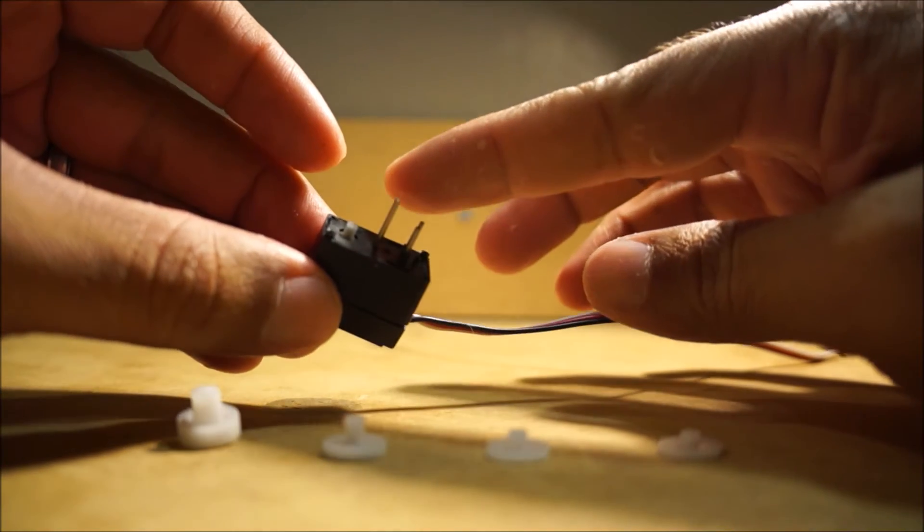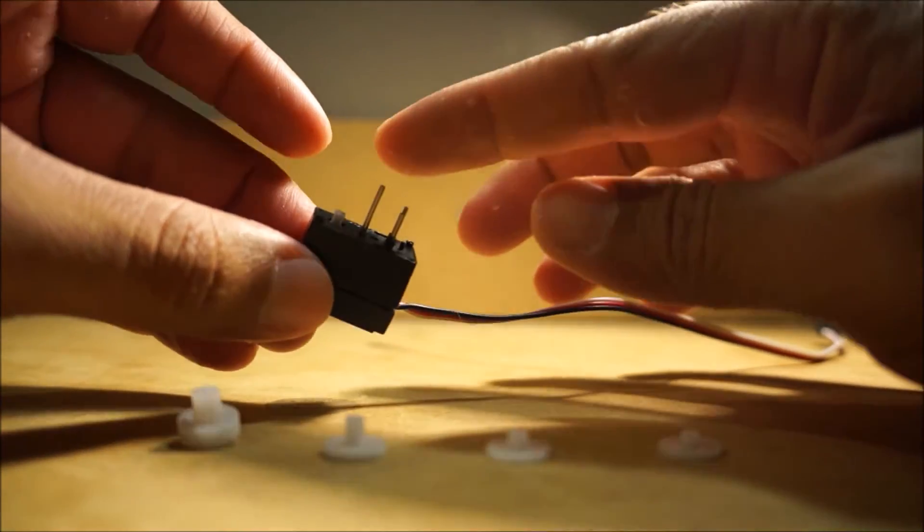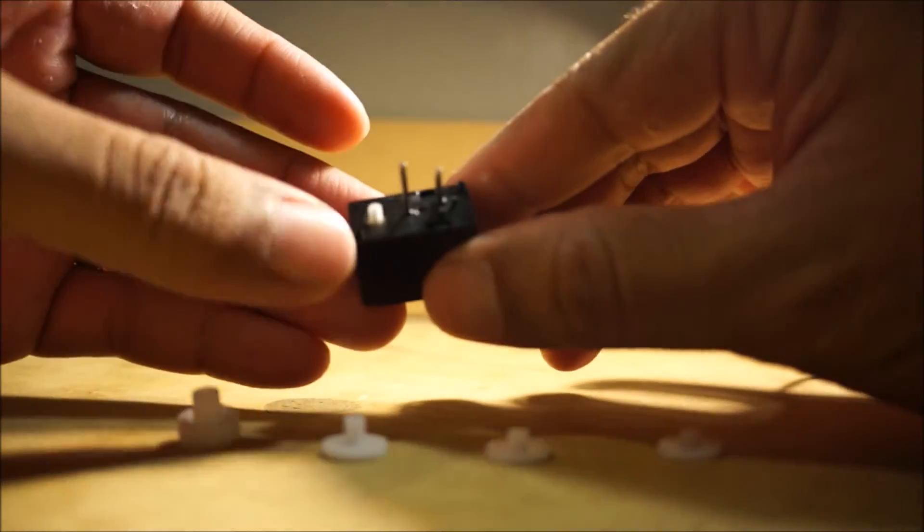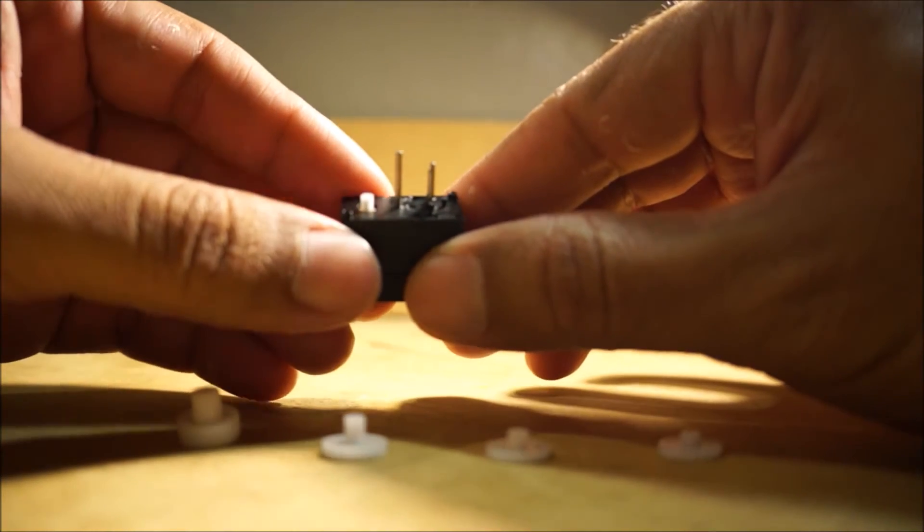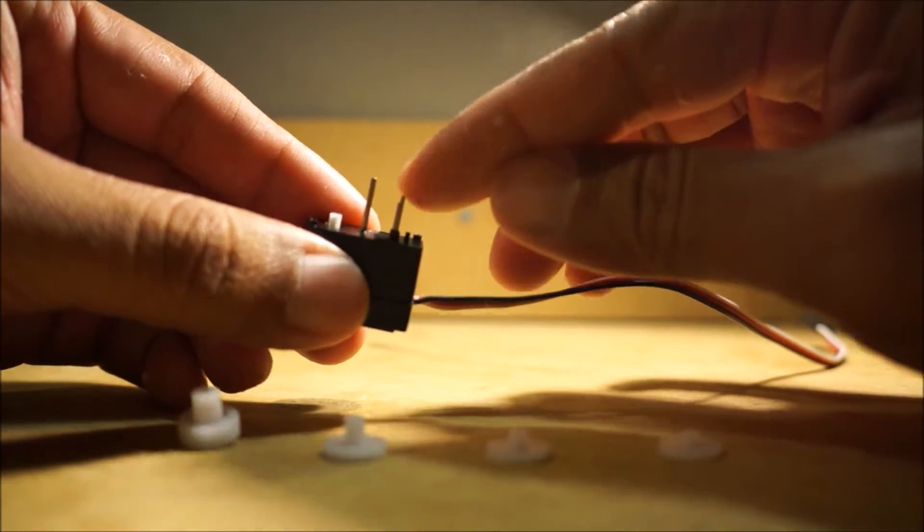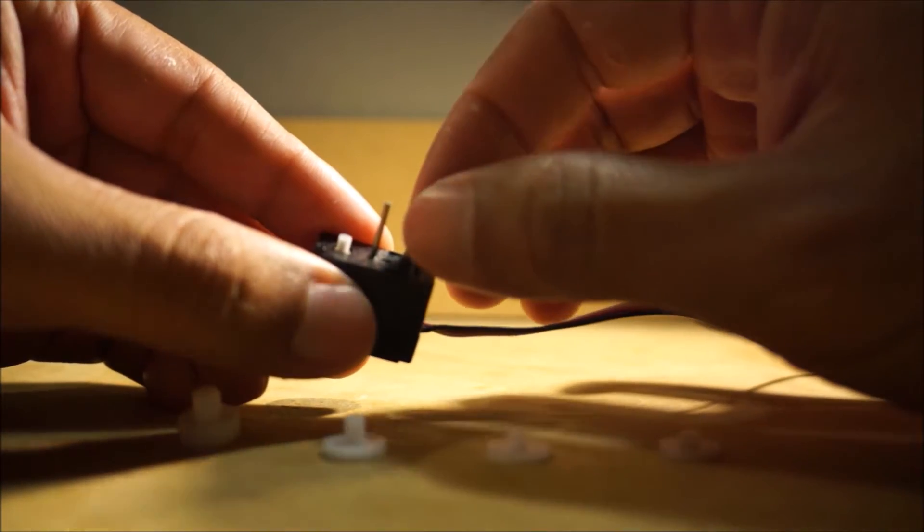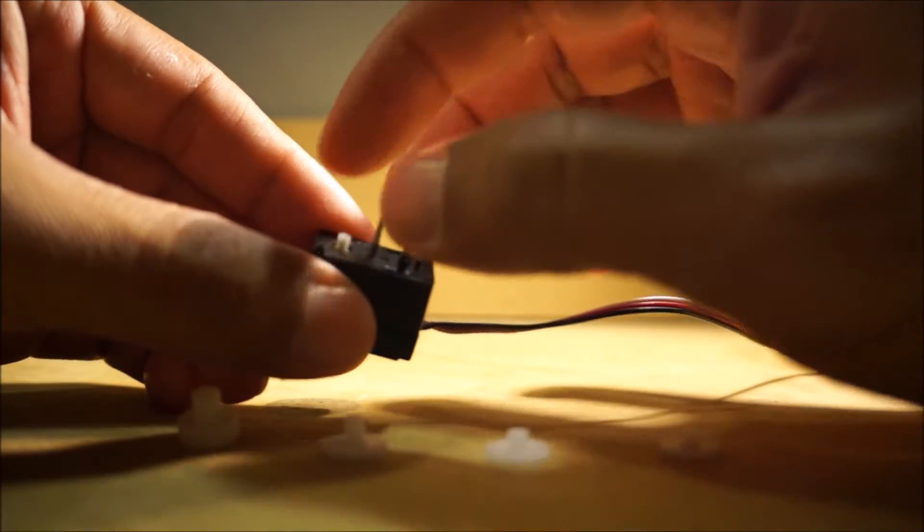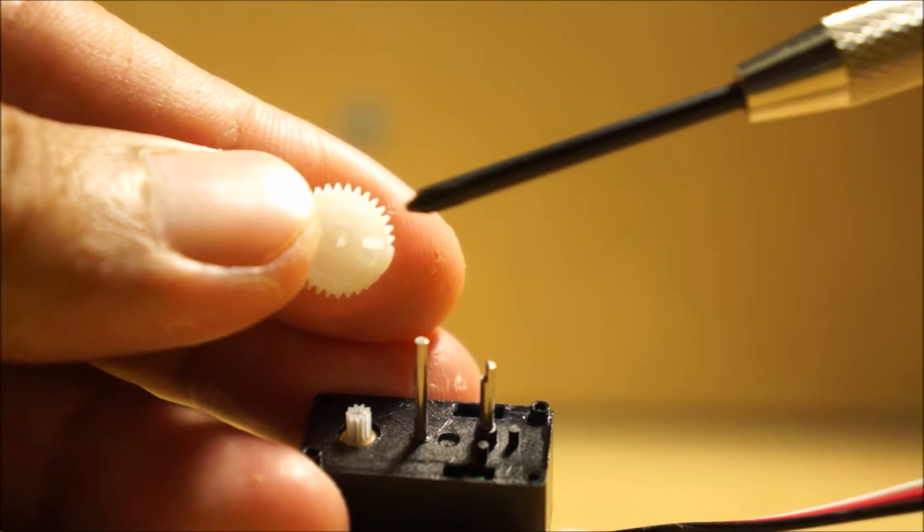So this is what it looks like after you remove the gears. This is basically your pins up here, that's the motor gear, that little white piece right there, and then this is your potentiometer that basically dictates how fast that motor spins.